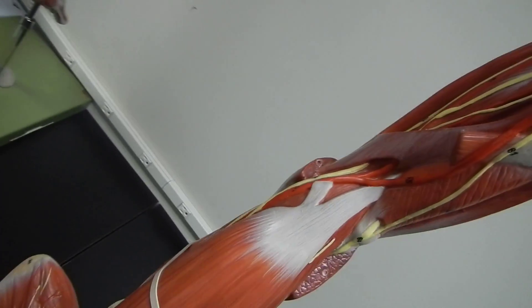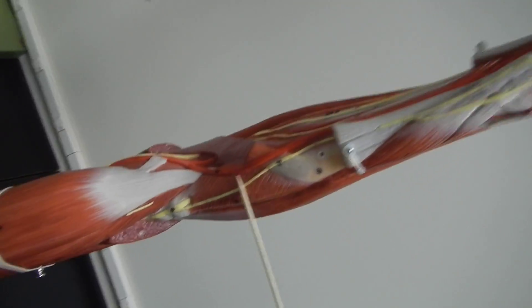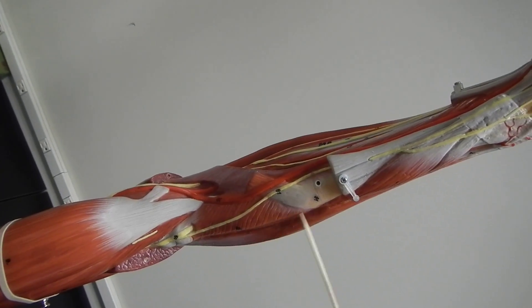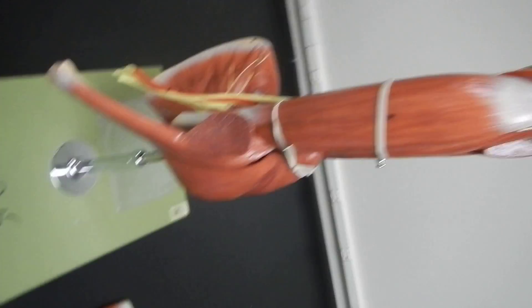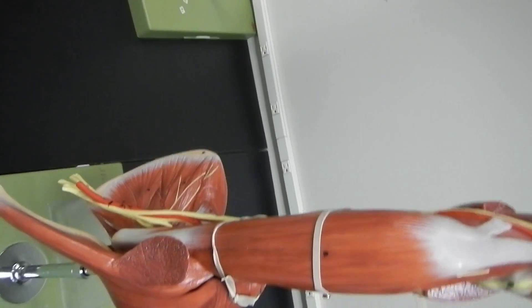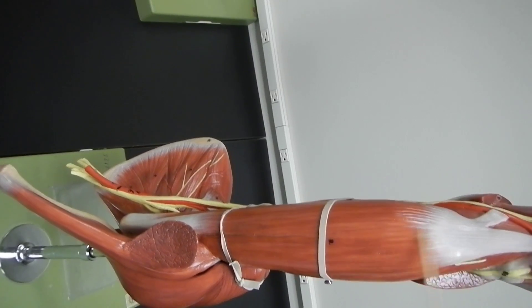Now I'm also going to remove these ones. This guy right here is the supinator. Now this one might be more familiar to you. This large muscle is the biceps brachii.